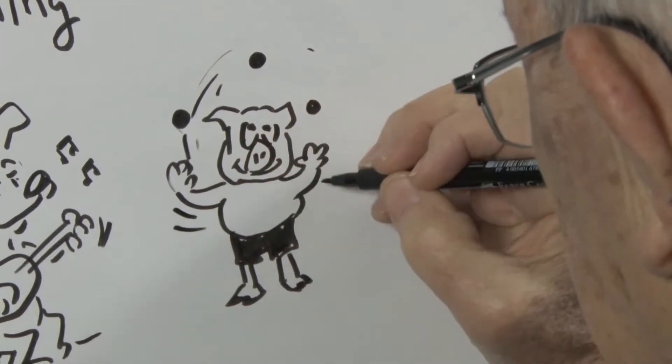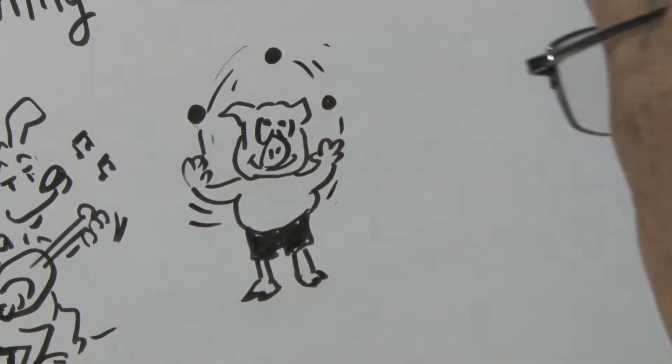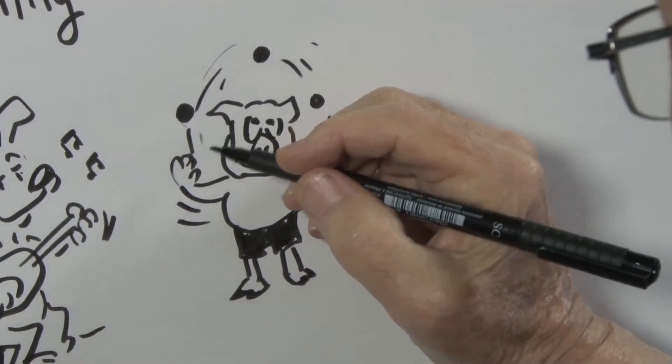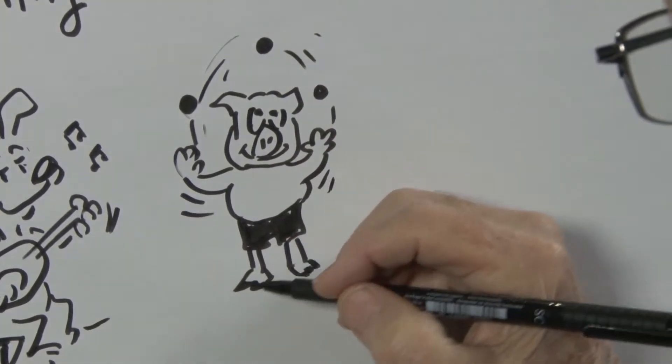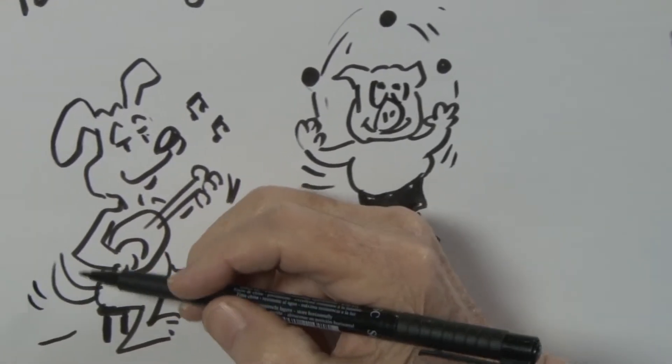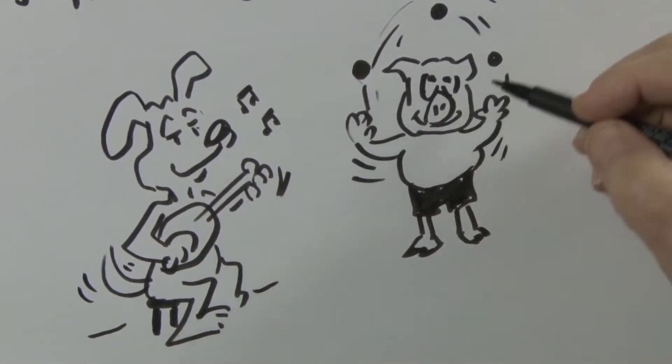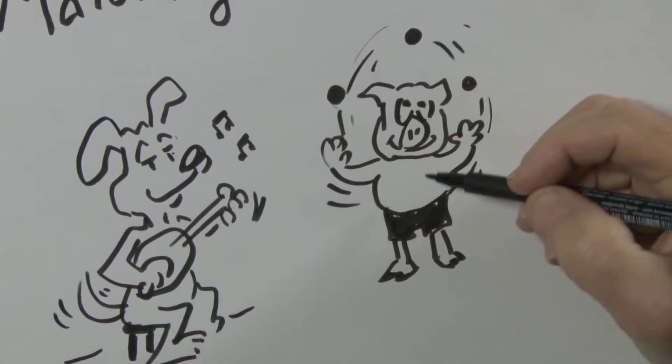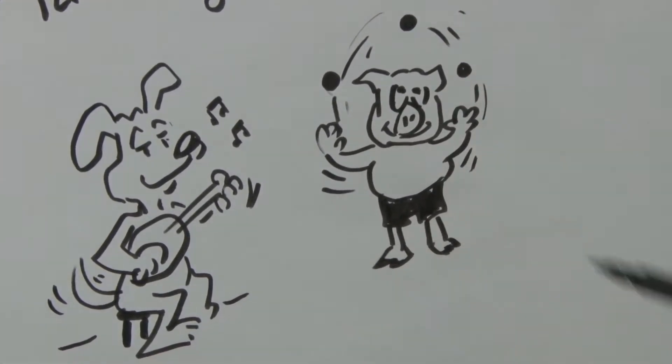You may recall I've talked about lines in cartoons to indicate movement. I guess we could have had some movement on the dog, but these lines indicate that the balls are moving as they're being juggled.